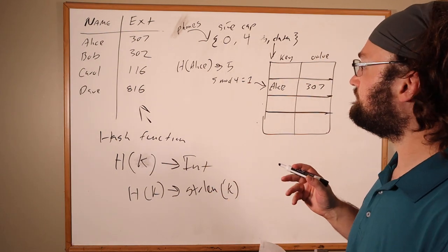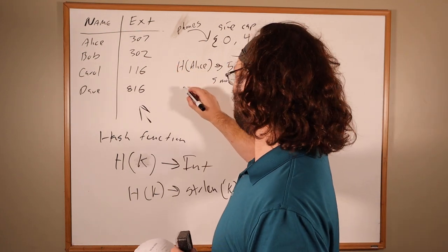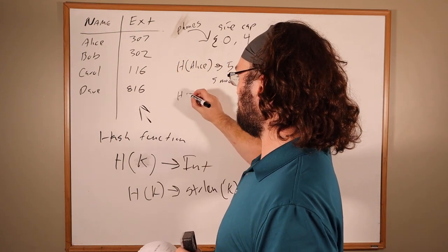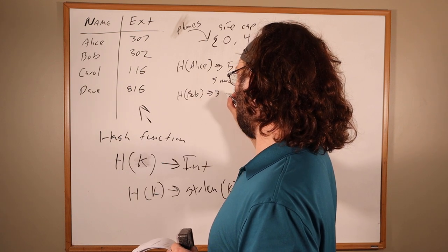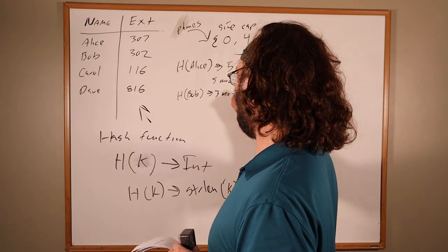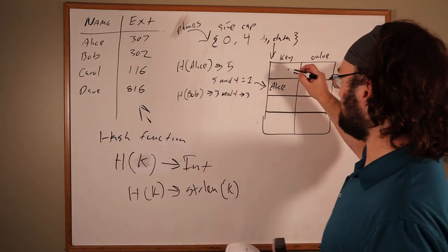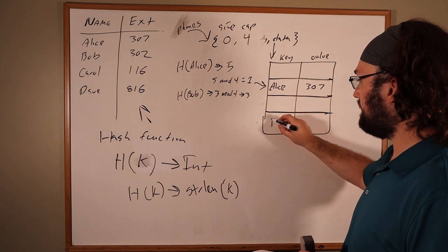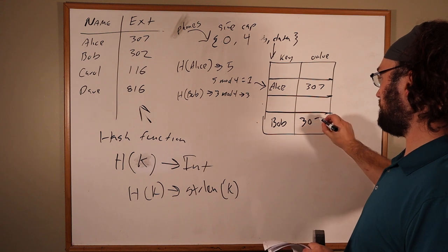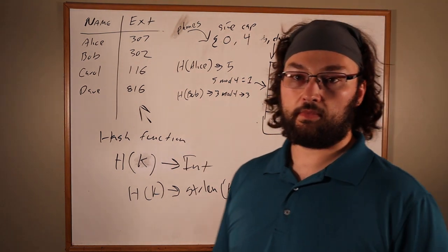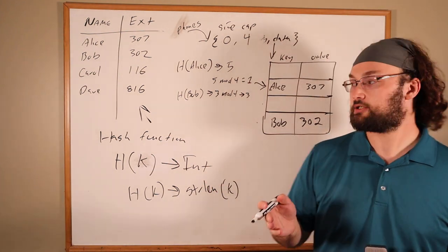Let's do some more inserts. The next value we're inserting is Bob. H of Bob is 3, mod 4 is 3. So this goes slot 0, 1, 2, 3—Bob goes here and we stick in the value 302.